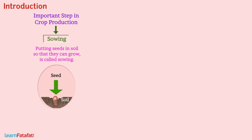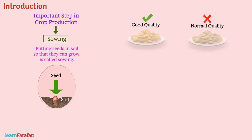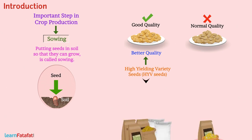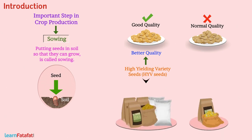For sowing, farmers select good quality seeds — these are the clean and healthy seeds of good variety. High yielding variety seeds, i.e., HYV seeds, are of better quality than normal quality seeds and give higher yield and higher agricultural produce.